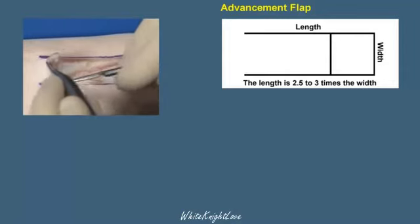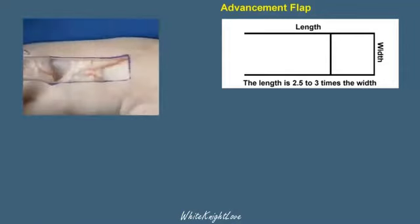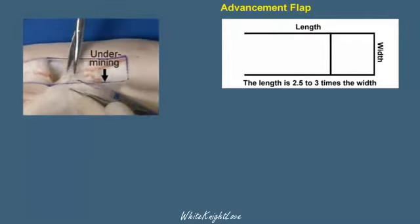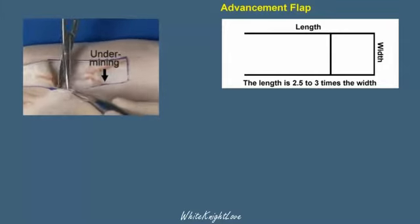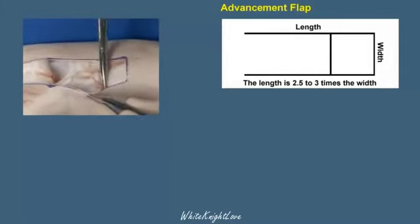Again, the entire flap is undermined in a layer between the skin and the deeper subcutaneous tissues. Undermining is continued beyond the extent of the dissection by one to two centimeters in all directions. This allows for easier flap mobility.